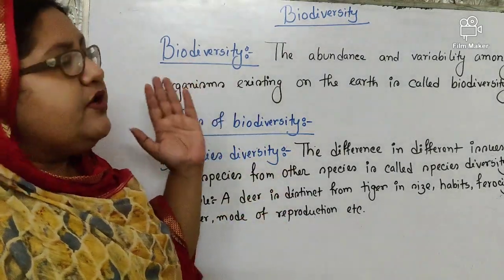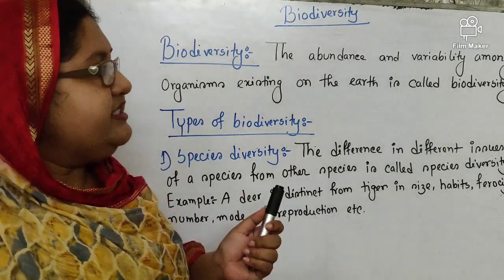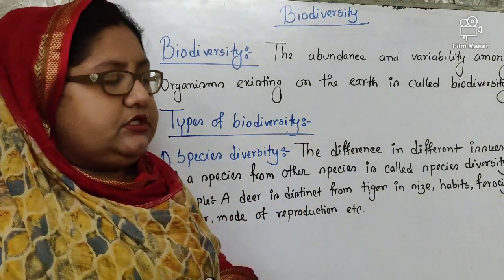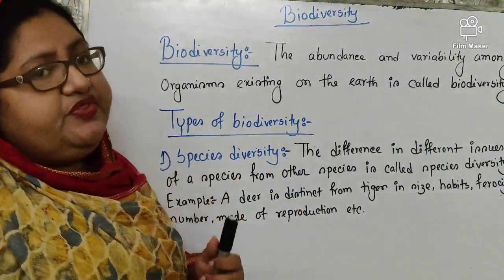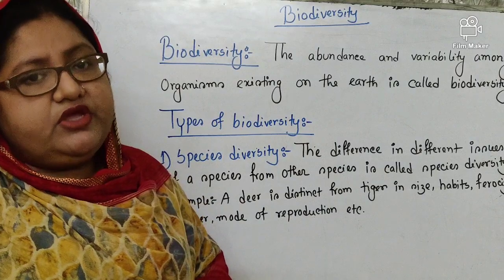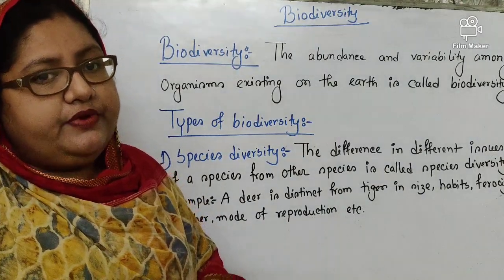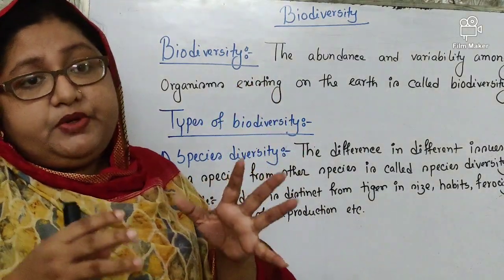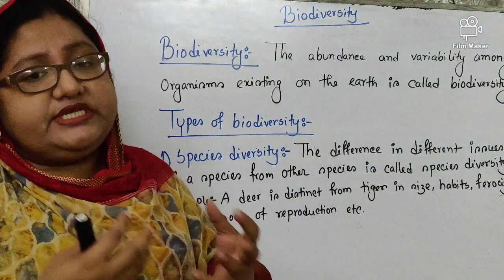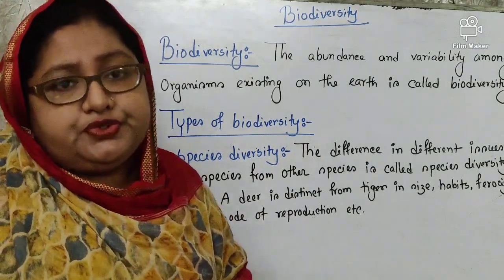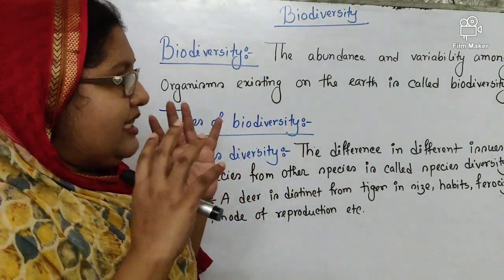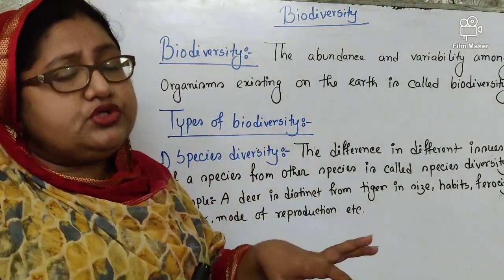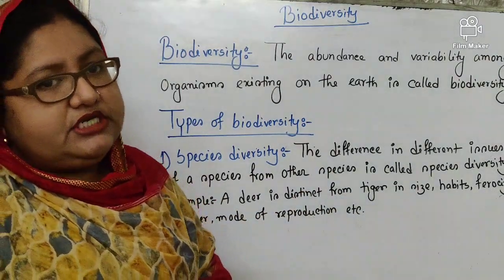Biodiversity. What is biodiversity? The abundance and variability among organisms that are existing on earth's surface is known as biodiversity. It means there are different types of organisms surviving on earth's surface, different types of species, and among these species there are some differences in their size, structure, and other aspects. Considering all these things, the evidence and variability found among those organisms is known as biodiversity.